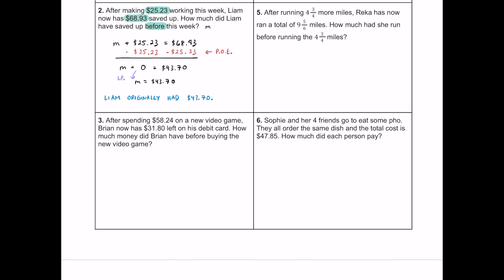Number three: after spending $58.24 on a new video game, Brian now has $31.80 left on his debit card. How much money did Brian have before buying the new video game? I'll use M for money again. If he's spending $58.24, we subtract that: M - 58.24 = 31.80. That's our equation to start with.